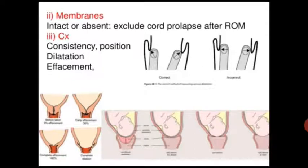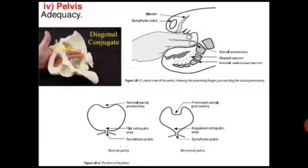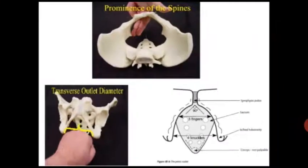Membrane findings include: cord flow depth, artificial rupture of membrane. The cervix is assessed for consistency, position, dilatation, and effacement. Pelvic assessment includes the diagonal conjugate — examining finger just reaching the sacral promontory — prominence of ischial spines, and transverse outlet diameter.